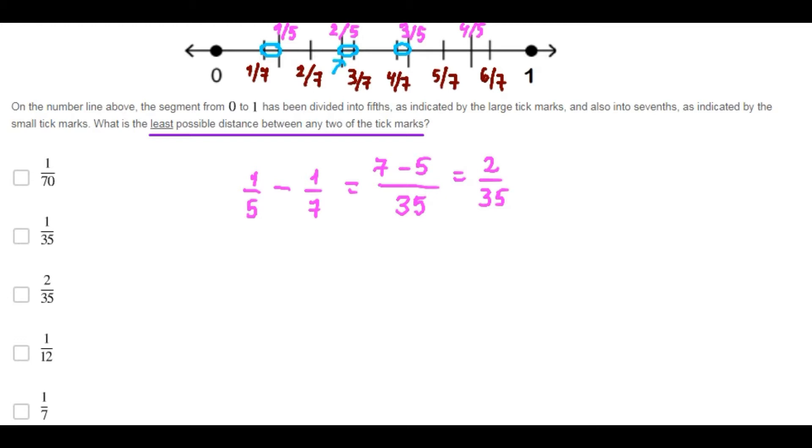Now let's try with this one. There the distance is three sevenths minus two fifths. The least common denominator is thirty-five. Here we have fifteen minus fourteen, one over thirty-five. As you can see, this one is smaller than the first one.